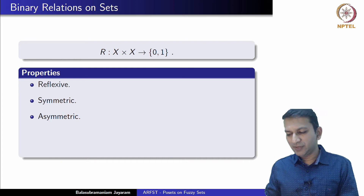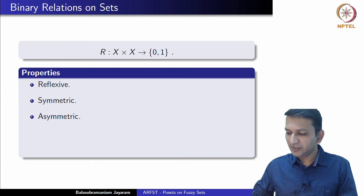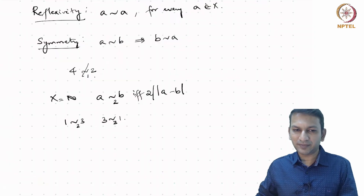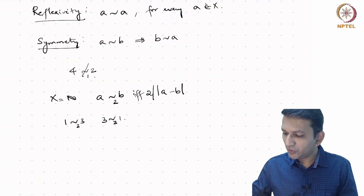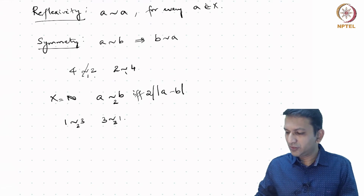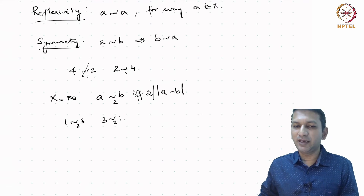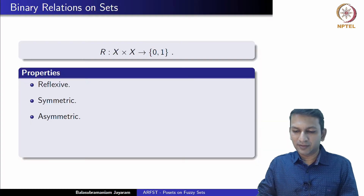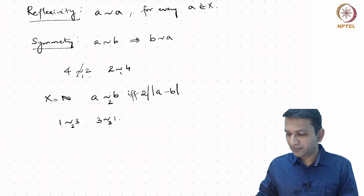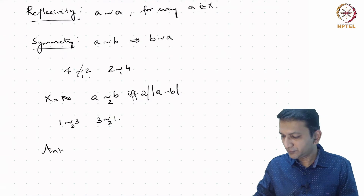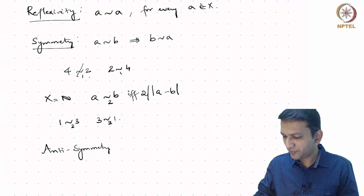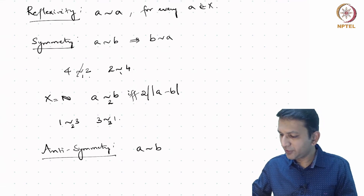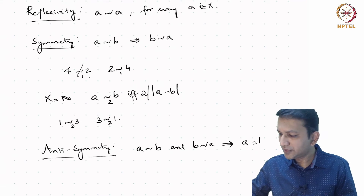There are also asymmetric relations, and our first relation of divisibility falls under that, since 4 is not related to 2 but 2 is related to 4. Asymmetry essentially means a being related to b does not imply b is related to a. Anti-symmetry says that if a is related to b and b is related to a, this implies a is actually equal to b.